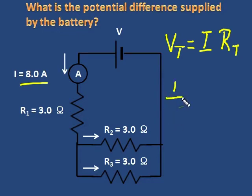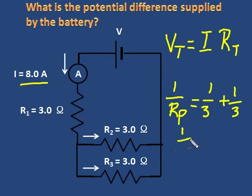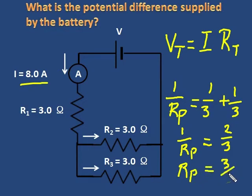We begin by looking at the parallel portion, and 1 over the parallel portion equals 1 over 3, that's 1 over R2, plus 1 over 3, that's R3. Well, this is easy. 1 over Rp, the parallel portion, is equal to 1 third plus 1 third, which equals 2 thirds. And I say, oh look, the parallel portion simply equals 3 halves. Just take the inverse. And I have 1.5 ohms for that parallel portion.